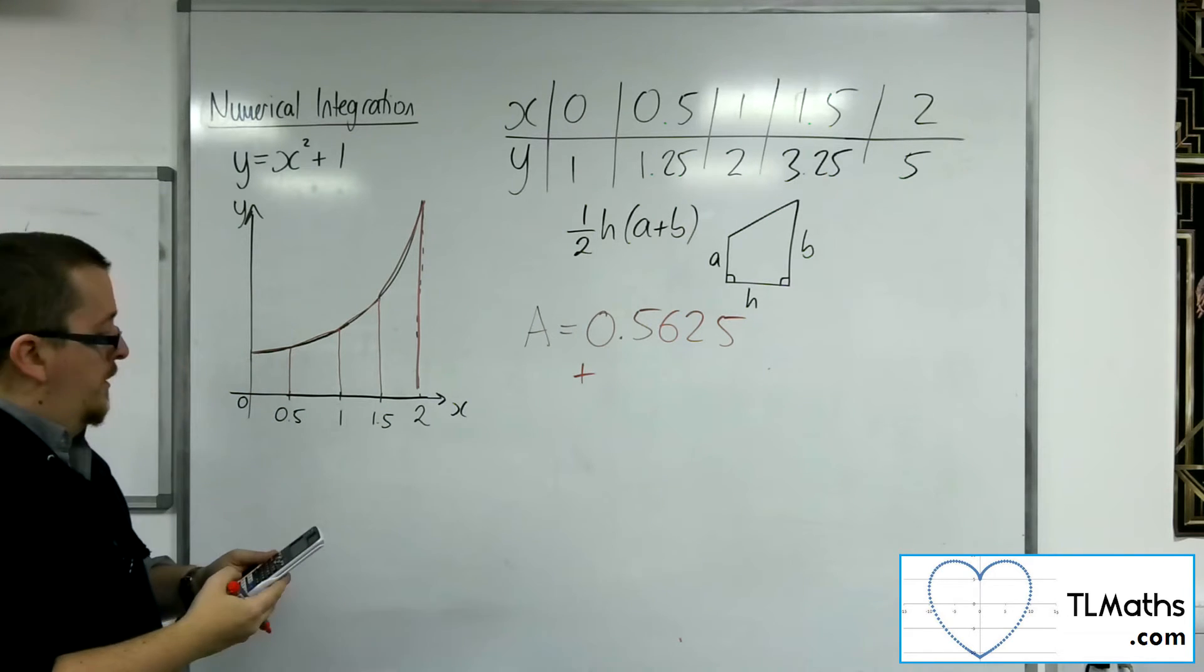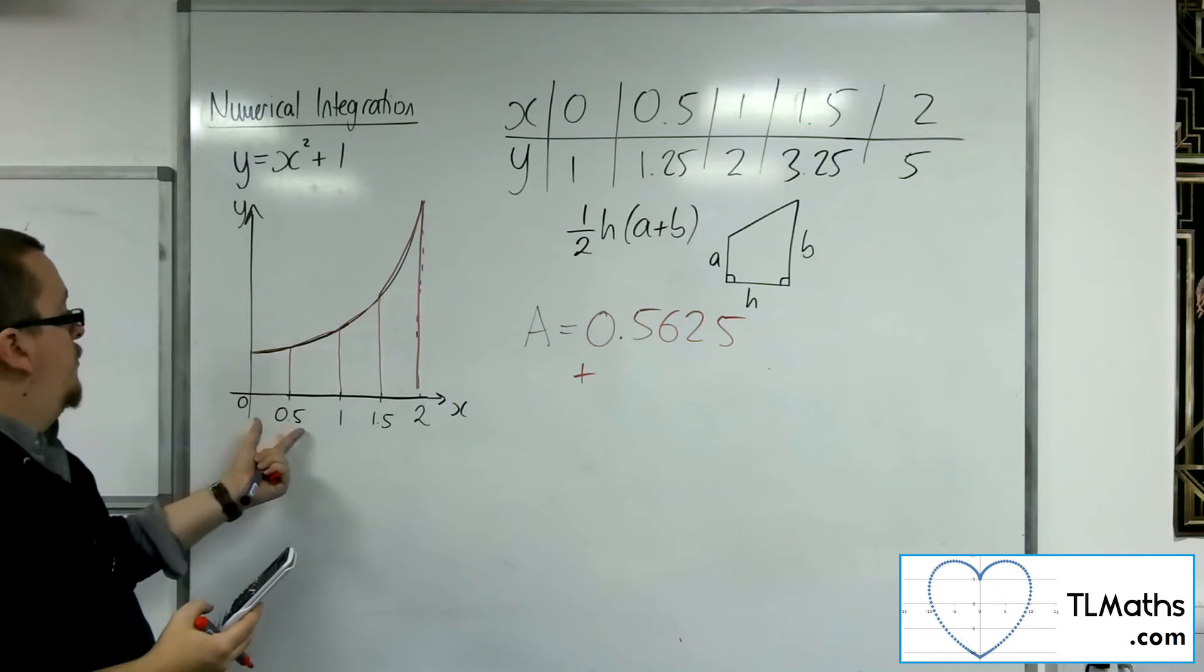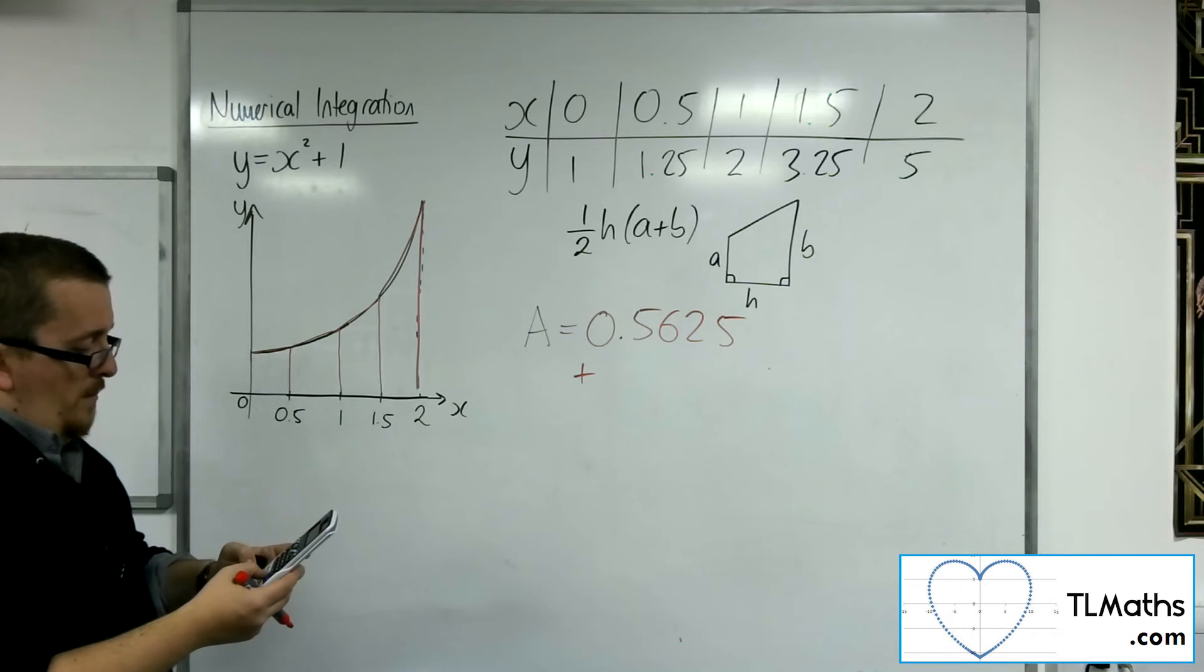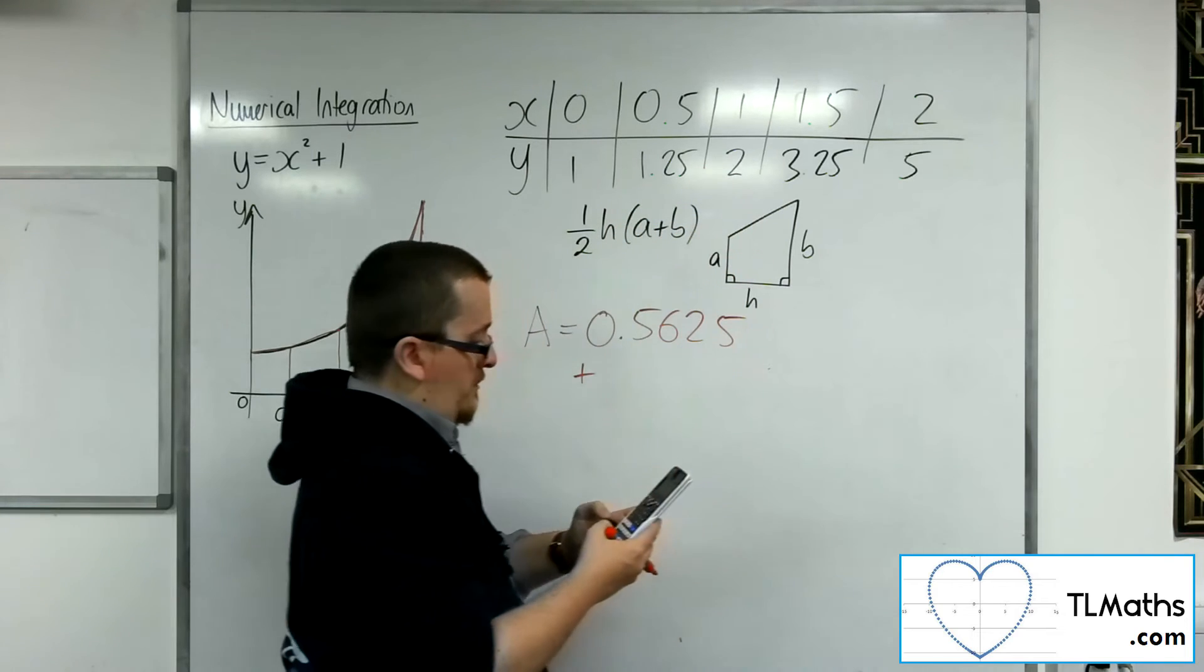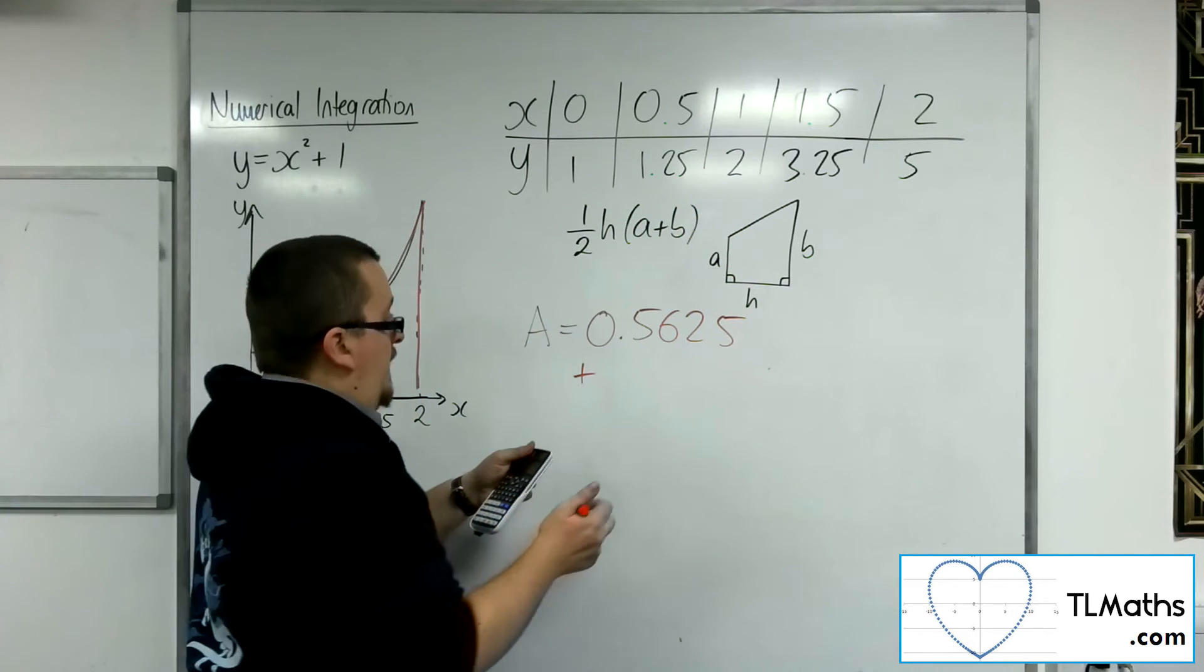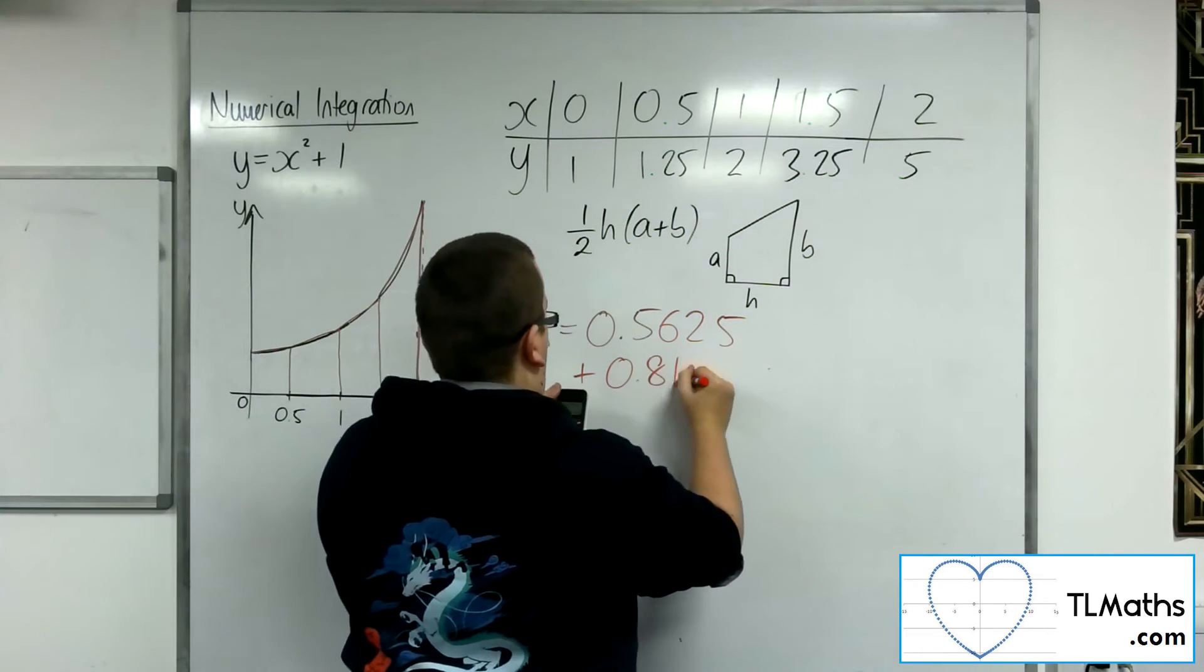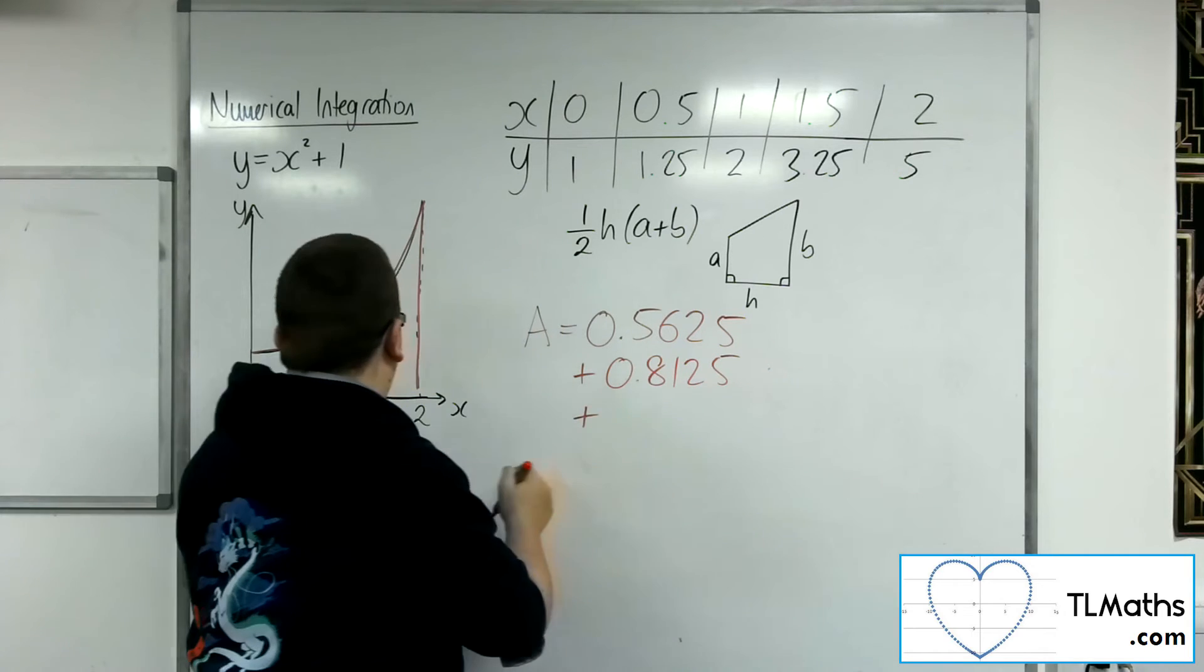Then we've got 1 half times 0.5 times the first, so 1.25, plus the second, so 2. So that's 0.8125, that's the second one.